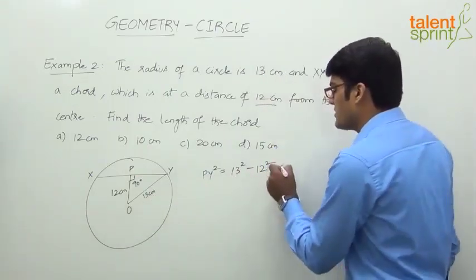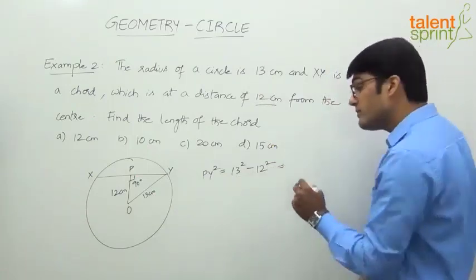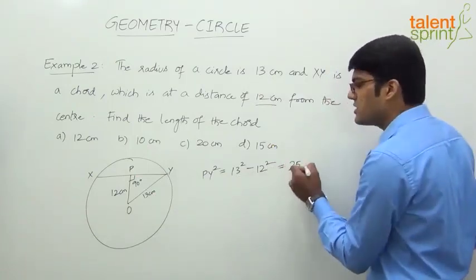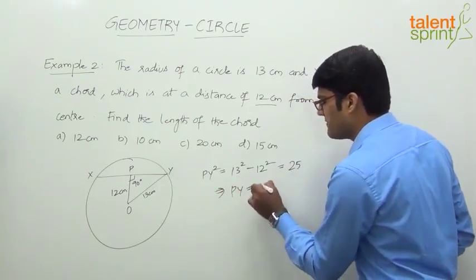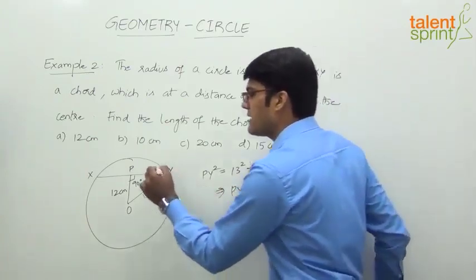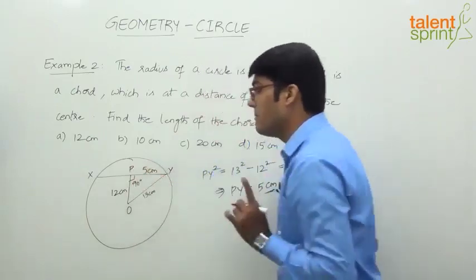So 13 squared minus 12 squared, which is 169 minus 144, equals 25. So PY squared is 25. From this, PY is equal to square root of 25, which is 5 centimeters. So this part is 5 centimeters.